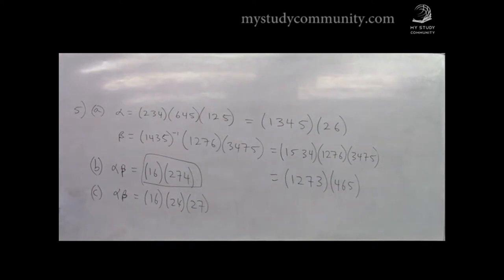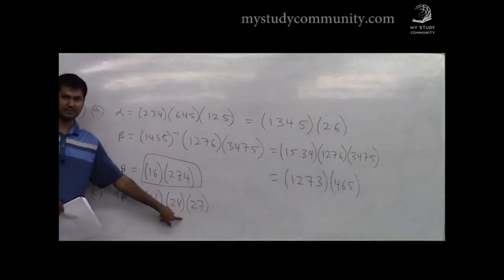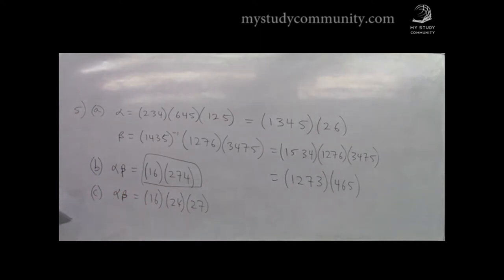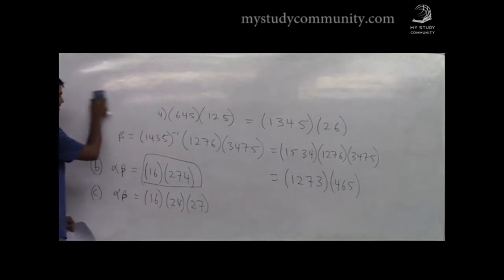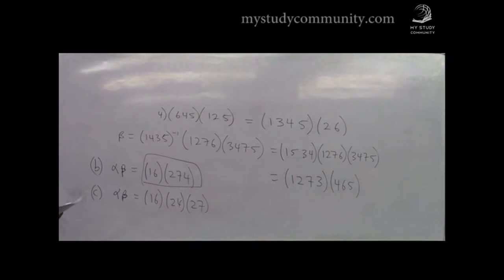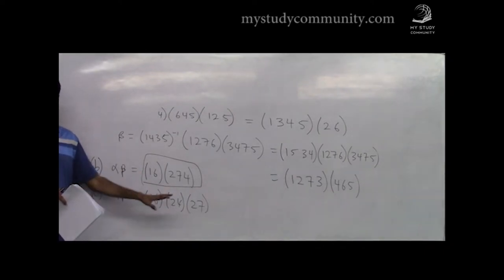For parity: just check the number of transpositions. Priority and order have nothing to do with each other. If the number of transpositions is odd, it's odd; if even, it's even. I have three transpositions here, so it's an odd permutation.